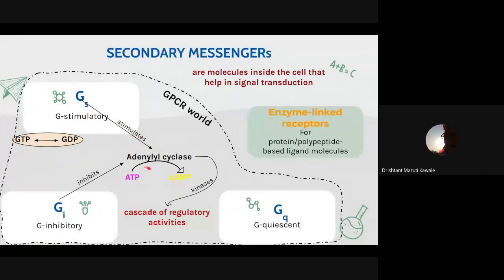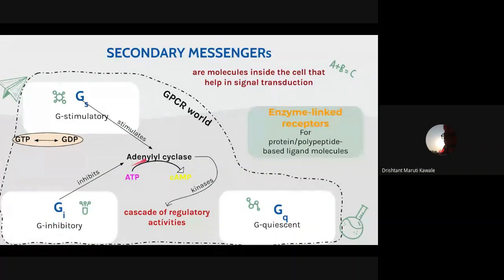The main secondary messenger in Gs signaling is cAMP. If an inhibitory neurotransmitter such as dopamine binds, the Gi pathway is stimulated instead. GPCR activates Gi protein — also associated with GDP — and when GDP is converted to GTP, Gi inhibits adenylyl cyclase. So while Gs stimulates adenylyl cyclase, Gi inhibits it. If adenylyl cyclase is inhibited, ATP won't be converted to cAMP, and the cascade of regulatory activities and kinase activation won't occur.